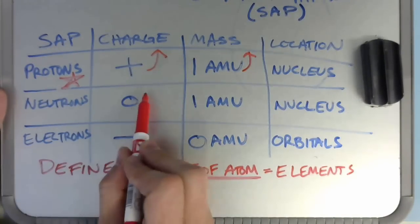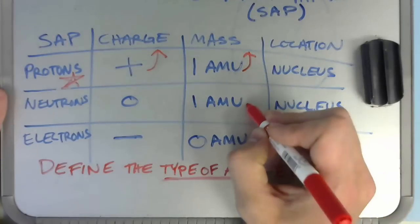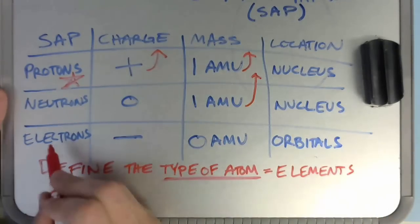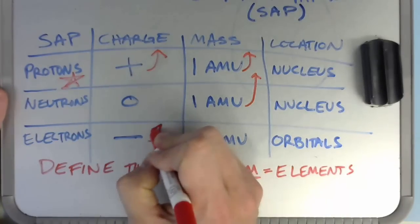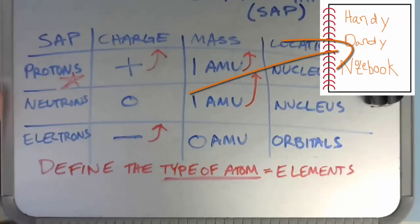Neutrons are not going to contribute to the charge, but will contribute to the mass. Electrons are not going to contribute to the mass, but will contribute to the charge. We'll get into more of that later.